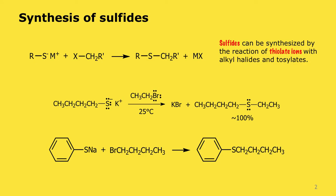We're going to look at a few of these reactions in more detail. The first is the synthesis of sulfides, shown here with the reaction of a thiolate ion. It would always be in the form of a salt with a counter ion — typically sodium, potassium, or lithium. They are excellent nucleophiles and undergo substitution reactions by SN2 to produce sulfides. The example shown is the potassium salt of a thiolate undergoing an SN2 reaction on ethyl bromide to give a very high yield of butyl ethyl sulfide.